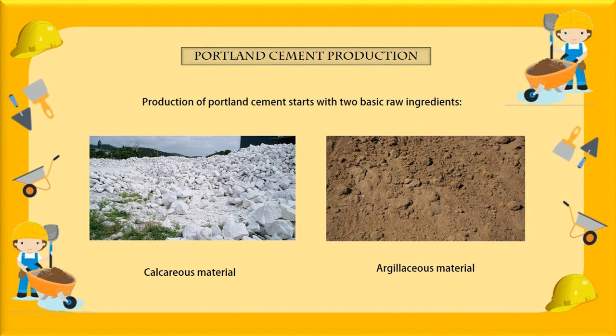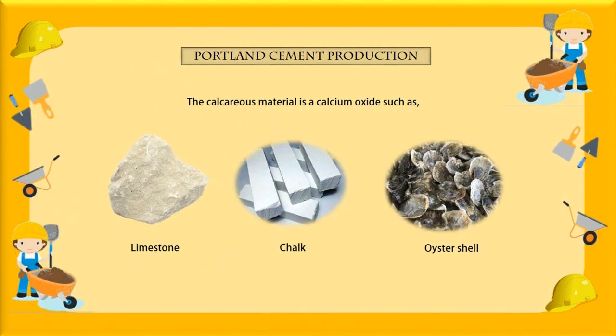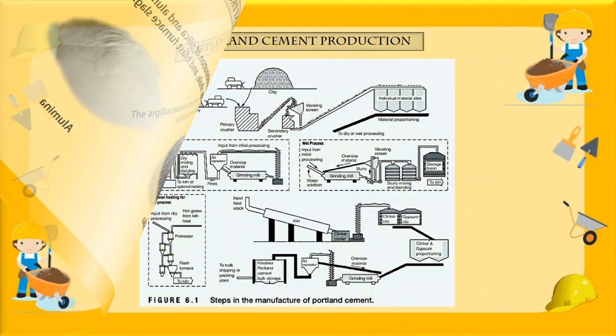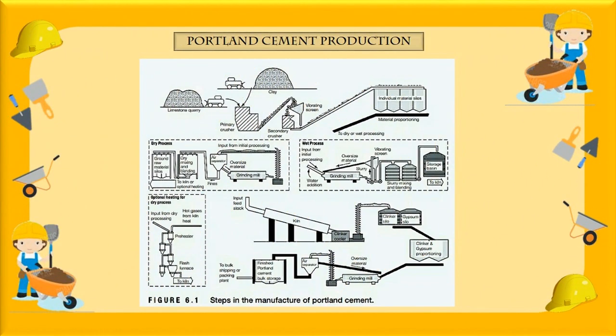Portland cement production starts with two basic raw ingredients: the calcareous material and an argillaceous material. The calcareous material is a calcium oxide source, such as limestone, chalk, or oyster shells. The argillaceous material is a combination of silica and alumina, which can be obtained from clay, shale, and blast furnace slag. As shown in figure 6.1, these materials are crushed and stored in silos. The raw materials in the desired proportions are passed through a grinding mill using either a wet or dry process.